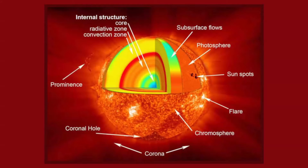The sun is a huge sphere of ionized gas. It has six regions: the core, the radiative zone, the convective zone, the visible surface known as the photosphere, the chromosphere, and the outermost region, the corona.